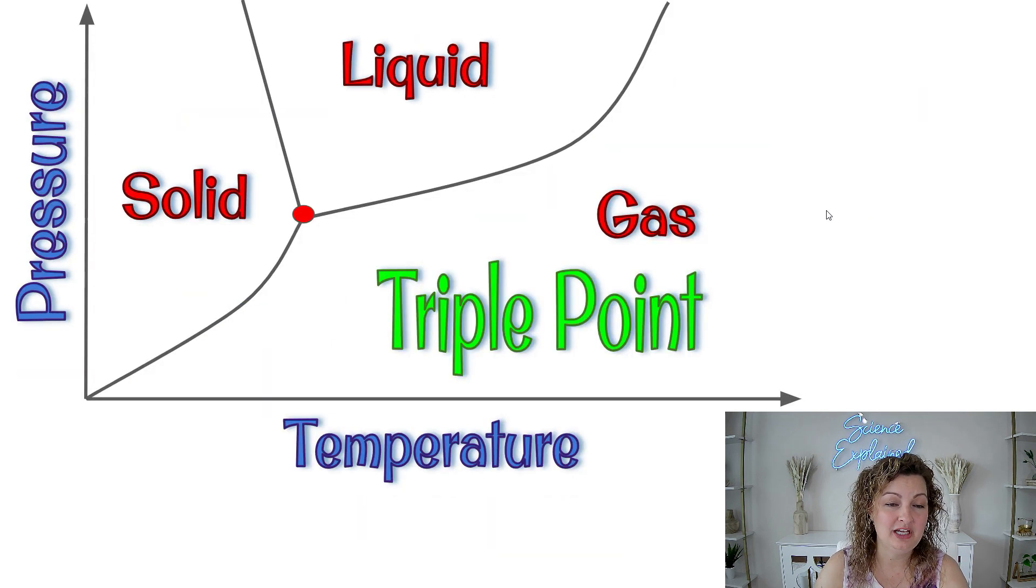So we need to be able to recognize this triple point where all of our line segments come together. And this is a unique and very rare thing where we have all three states of matter occurring at the same time. So just imagine this. Imagine like a little puddle of water, so liquid.